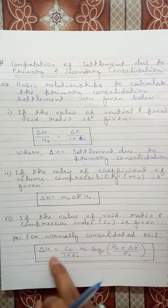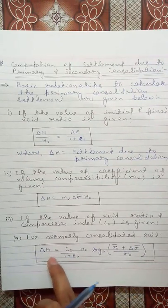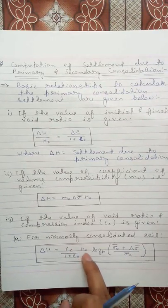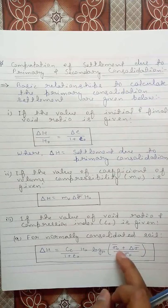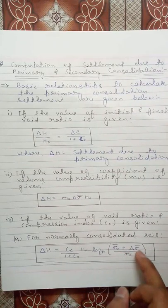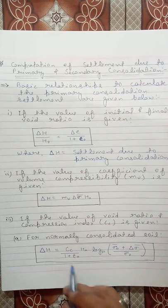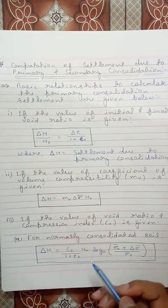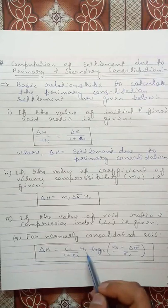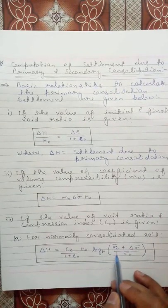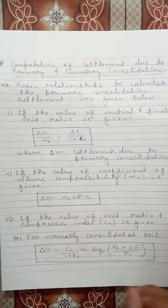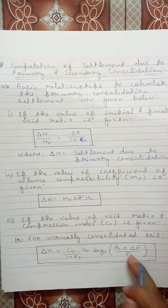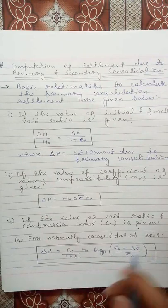For normally consolidated soil, the settlement equation is: δH = Cc/(1+e₀) · H₀ · log₁₀((σ₀ + Δσ)/σ₀), where Cc is the compression index, e₀ is the initial void ratio, H₀ is the thickness of the layer, σ₀ is the initial overburden pressure, and Δσ is the increment in pressure.